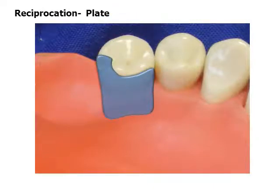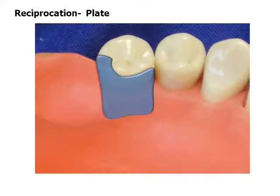Reciprocation is required on the primary abutment. It may take the form of a rigid circumferential clasp, a bar vertical minor connector, or plating. If using the mesial rest, eye bar, and proximal plate — or PI — it is recommended to obtain reciprocation from the mesial bar minor connector and the short distal proximal plate.